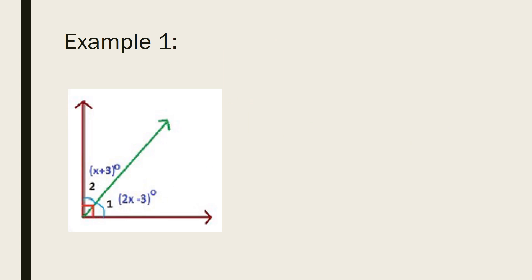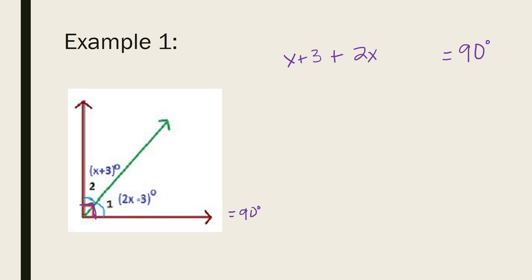How can this definition help me to understand a problem or solve for a given value of x? In example one, you're just given a picture. Here we have two angles, and we notice the important symbol — the red box in the corner — which means that these two angles equal 90 degrees. That means complementary angles. So when I set up an equation using angle addition, the whole angle is 90 degrees, and the two angles on the inside should add up to that. So I have x plus 3 plus 2x minus 3, and together these two angles should equal 90.